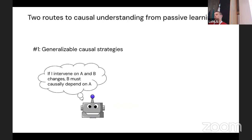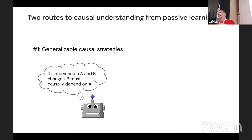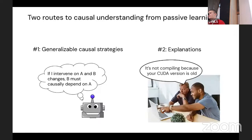That's the question that motivated this project: language models are mostly passively trained — why do they nevertheless show behaviors that seem at least superficially causal? Are they just cheating, or is there something more interesting going on? What I'm going to suggest is that there are actually two routes that language models could take to causal understanding from passive learning. First, even if you can't learn causal structure itself from passive data, you can learn generalizable causal strategies that allow you to, at test time, actually infer causal structure. Second, explanations are powerful — they're a gateway to discovering causal structure, because that's precisely what they're intended to do.